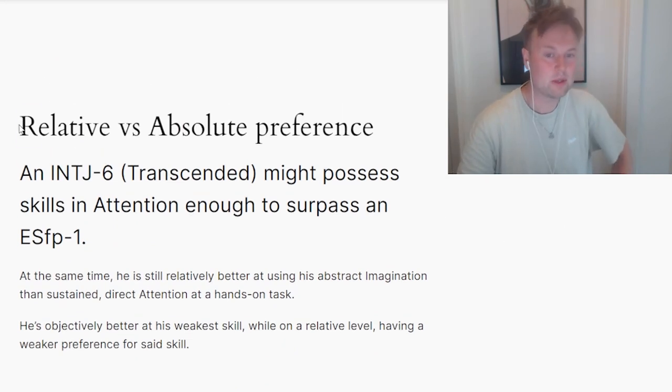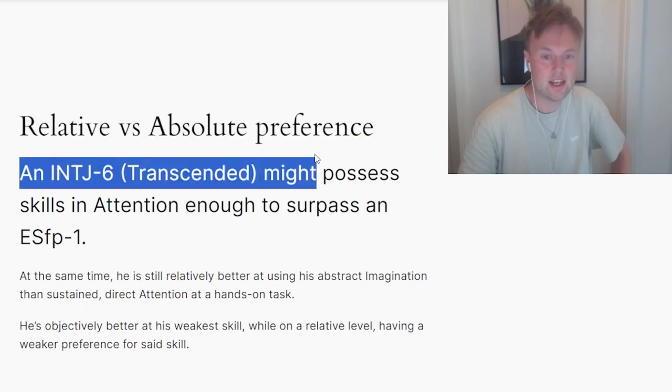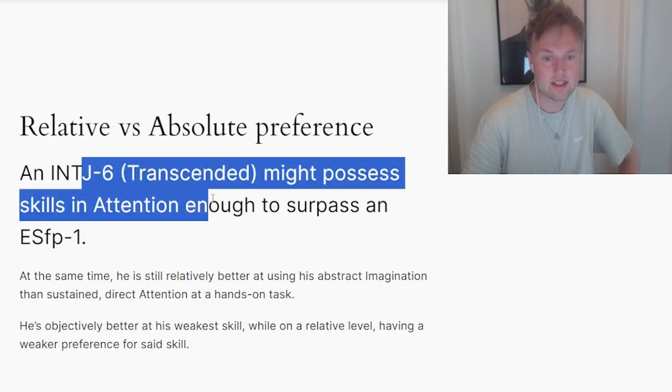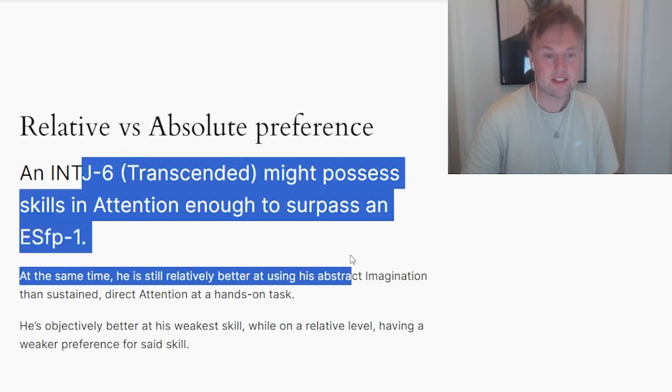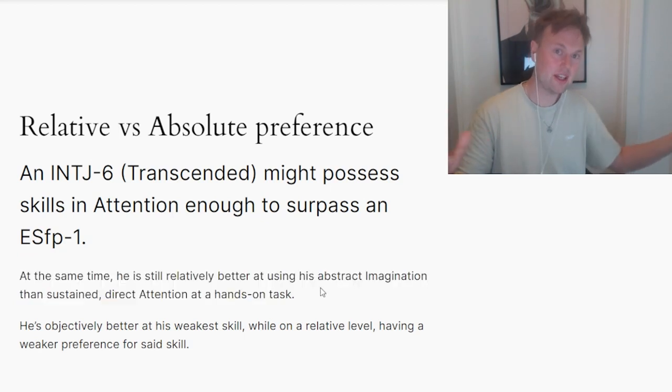I also want to briefly talk about relative versus absolute preferences. An INTJ who's transcended and really worked on himself might possess skills in attention enough to surpass an ESFP. At the same time, he might still be relatively better at daydreaming and imagination than he is at attention. So personally, he prefers to use imagination to survive and manage the world. But when he needs to, he's comfortable using attention to deal with hands-on practical tasks.